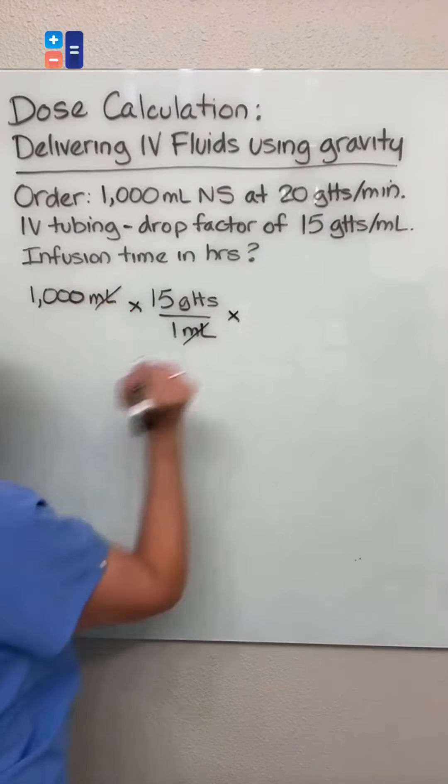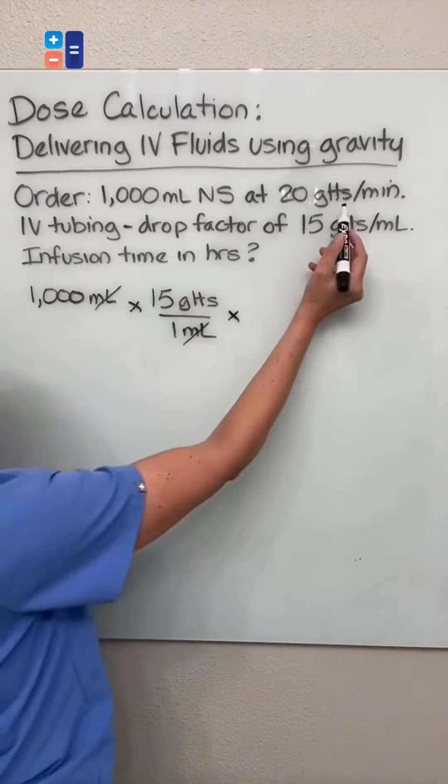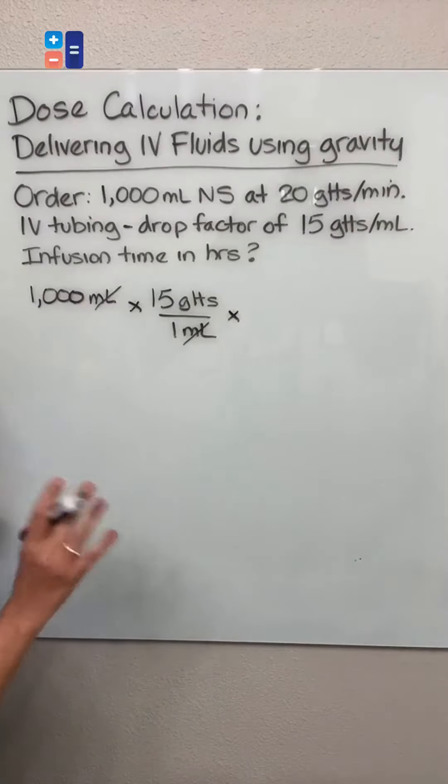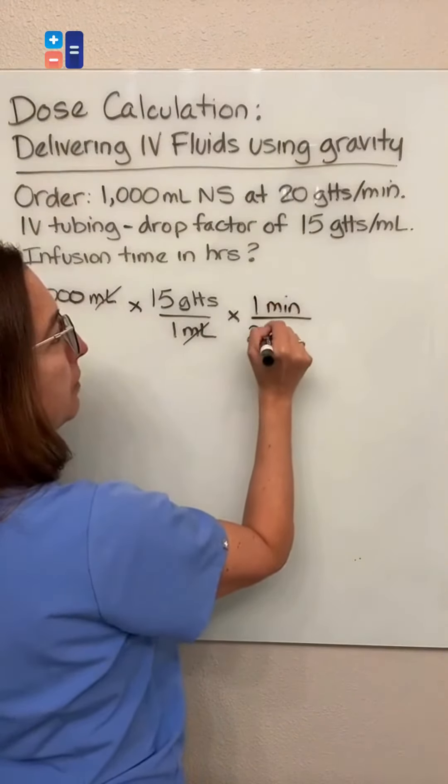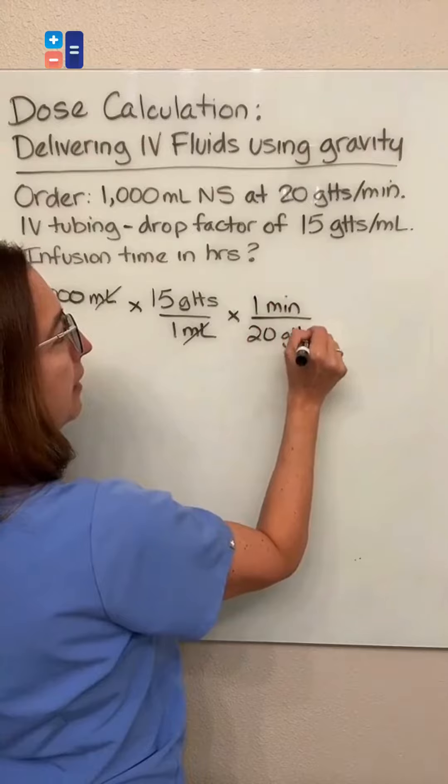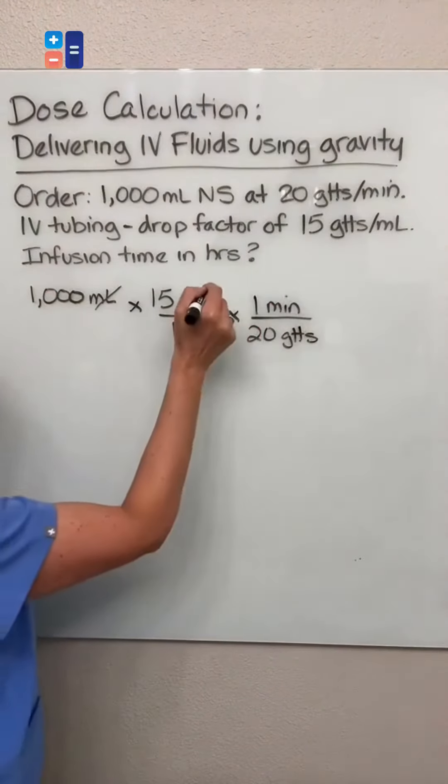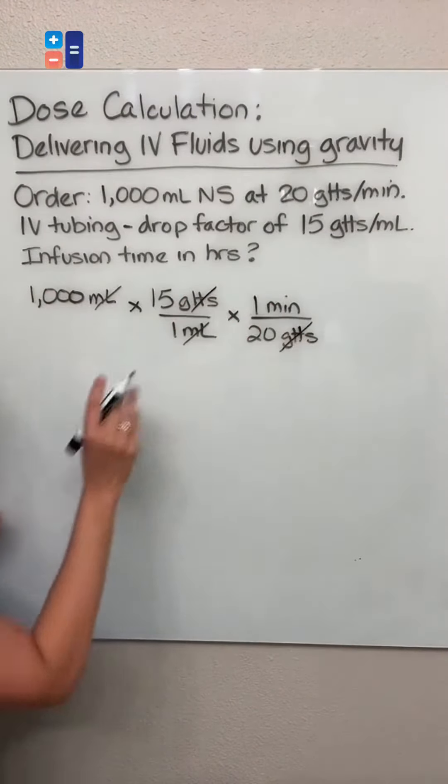And then I'm going to multiply this times our ordered rate, which is 20 drops per minute. But I want to set it up such that my drops will cross off. So I'm going to put my drops on bottom and my time on top so that my drops cross off and I'm left with minutes.